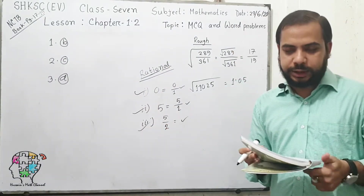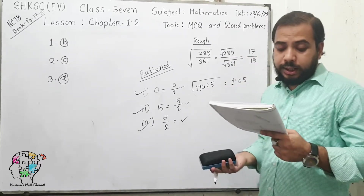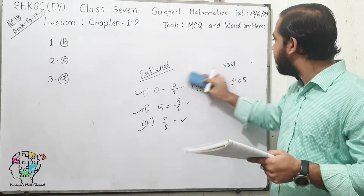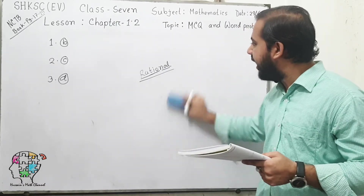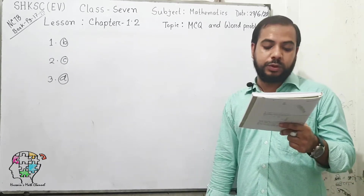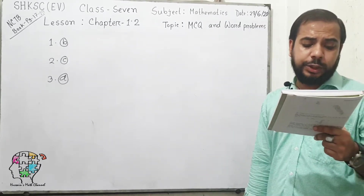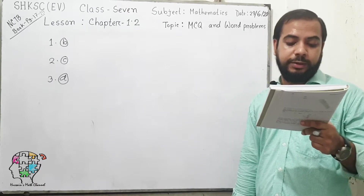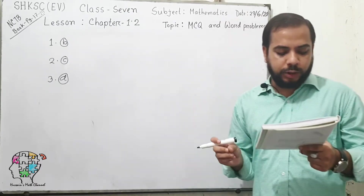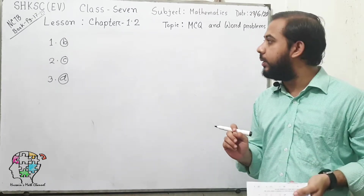Now move on to the next question. There is a stem given: the difference of squares of two consecutive numbers is 19. Answer questions number 4 and 5 based on this information. Question number 4: if one number is 10, what is the other number?